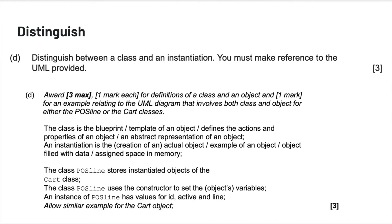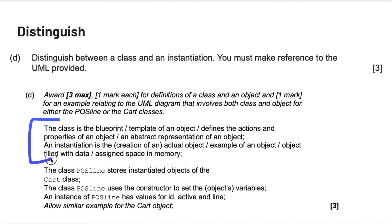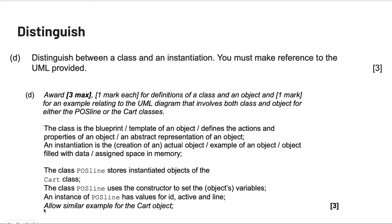Next, distinguish. For example: distinguish between a class and an instantiation — you must make reference to the UML provided. This is a three-point question. The mark scheme says award one mark each for definitions of a class and an object, and one mark for an example relating to the UML diagram involving both class and object. So distinguish is really about defining both terms and then describing them in the context of the class structure.